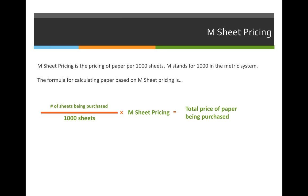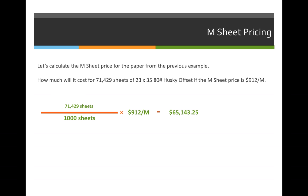Notice that the prices we calculated — $65,190 and $65,143 — when you calculate the cost of paper using M sheet pricing or CWT pricing, it should come out very, very close. There really shouldn't be much of a difference.